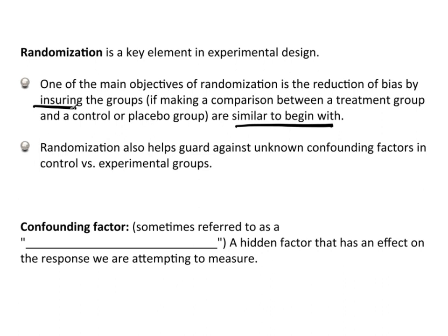Randomization also helps guard against unknown confounding factors in control versus experimental groups. A confounding factor — we sometimes refer to it as a lurking factor or lurking variable — is something that's hidden. It's a hidden factor that has a direct effect on whatever it is that we're trying to measure. You've got to watch out for those; they can really mess things up.